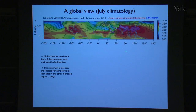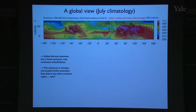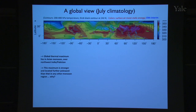This is a global view for boreal summer — the Americas, Africa, and South Asia — plotting upper tropospheric temperature and boundary layer θE or moist static energy. What stands out is really the South Asian monsoon region: it has a temperature maximum that is global in nature, stretching about halfway around the globe and stronger than any of the other monsoon regions.